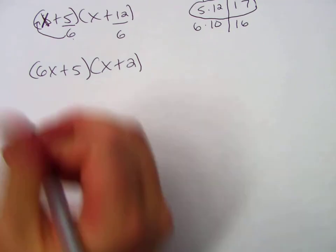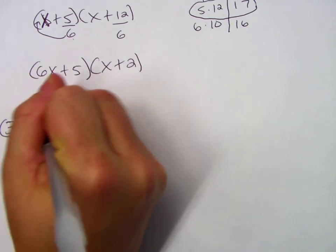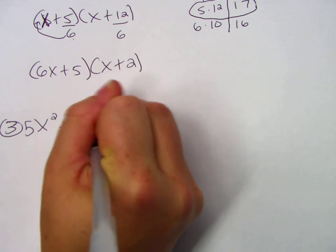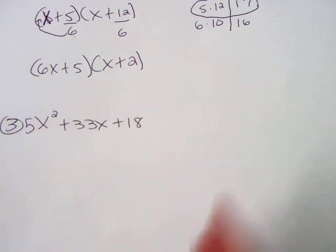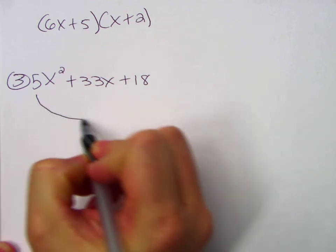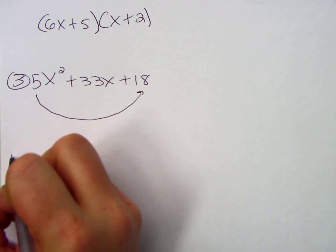All right. Try the next one on your own. 5x squared plus 33x plus 18. Again, pause the video. Try it on your own. Math is not a spectator sport. I slide the 5 to the end, and I create my new trinomial.